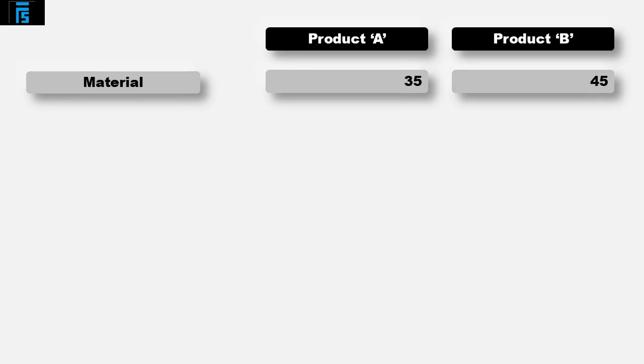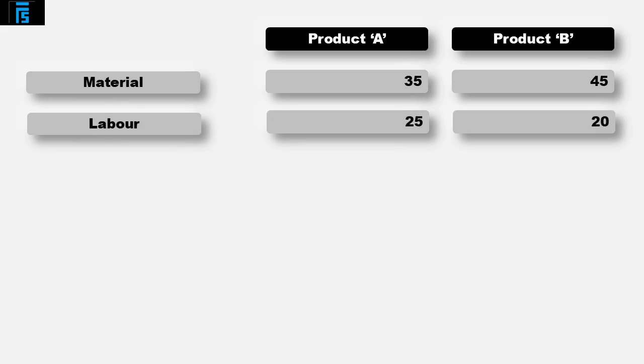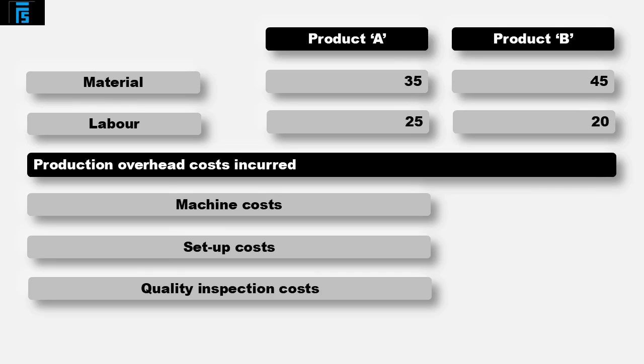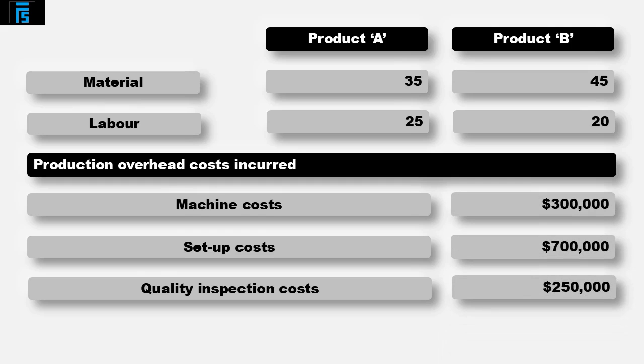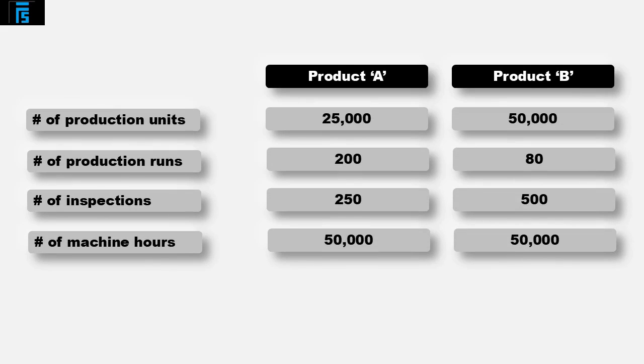Let's apply these steps to a comprehensive example. Costing Company produces two products, Product A and Product B. The direct material costs are $35 for Product A and $45 for Product B. The direct labour costs are $25 for Product A and $20 for Product B. The production overheads are broken into three cost pools: machine costs, set-up costs, and quality inspection costs, totalling $300,000, $700,000, and $250,000 respectively — giving total production overhead of $1.25 million. We are also given the number of production units, production runs, inspections, and machine hours for each product.